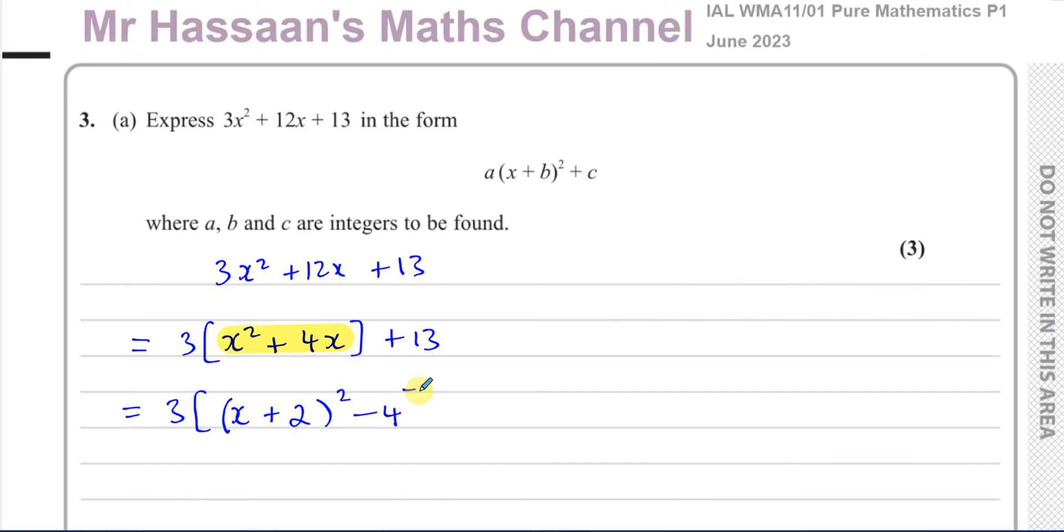And even if it was, for example, if that was x² - 4x, I'd have (x - 2)² and I'd have x² - 4x, and I'd still get a plus 4 at the end. That's why you always take away the number that's in here squared. You always take it away.